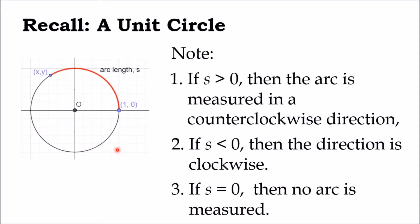Remember that in a unit circle, the arc length S can be measured in different directions. S is positive when measured in counterclockwise direction, and S is negative when the direction is clockwise. If S is zero, then no arc is measured.